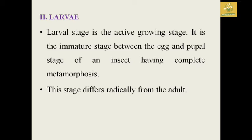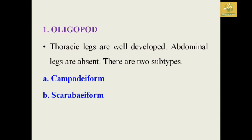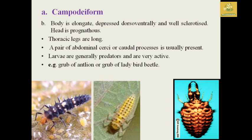The second stage is the larval stage, known as the active growing stage — the immature stage between egg and pupal stage of an insect undergoing complete metamorphosis. The stage differs rapidly based on adult habits. There are three types of larvae: oligopod, polypod, and apod. In oligopod larvae, thoracic legs are well developed and abdominal legs are absent. There are two subtypes: campodeiform and scarabiform.